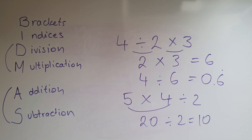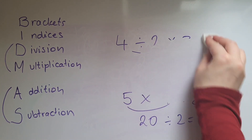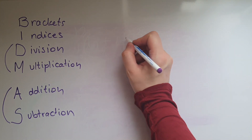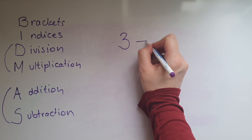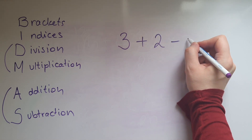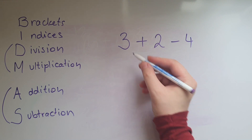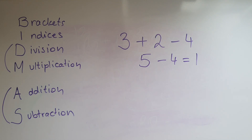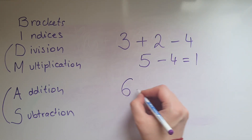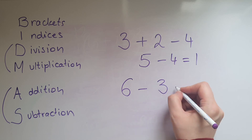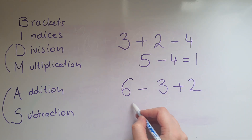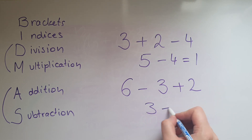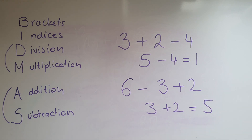The same thing applies to addition and subtraction — you do the one that comes first from left to right. So if I have 3 add 2 take away 4, I do 3 add 2 first to get 5, take away 4, which gives me 1. Or if I have 6 take away 3 add 2, I do 6 take away 3 first to get 3, then add 2 to give me 5.